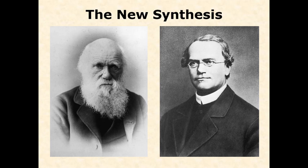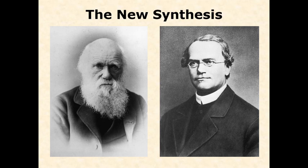One of these is Charles Darwin, pictured here on the left later in life, and the other is Gregor Mendel. Charles Darwin is famous for his theory of evolution via natural selection and his ideas about the common ancestry of all life on Earth. Gregor Mendel is famous for describing the fundamental basis of inheritance — genetics. He is the father of modern genetics.